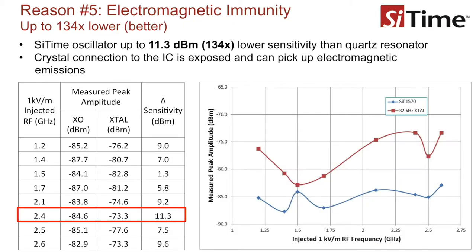Reason number five: MEMS oscillators are much less sensitive to EMI. Electromagnetic energy, which is common in most systems, can be picked up by exposed PCB traces which connect the quartz resonator to the IC containing the oscillator circuit. This noise can be coupled into the oscillator circuit and passed to the output, potentially adding jitter and noise to the system. By contrast, MEMS oscillators have no exposed PCB connections between the MEMS resonator and IC containing the oscillator, and the bond wires that connect the MEMS resonator to the CMOS IC are extremely short. This results in MEMS oscillators having up to 11.3 dBm lower sensitivity than quartz resonators.